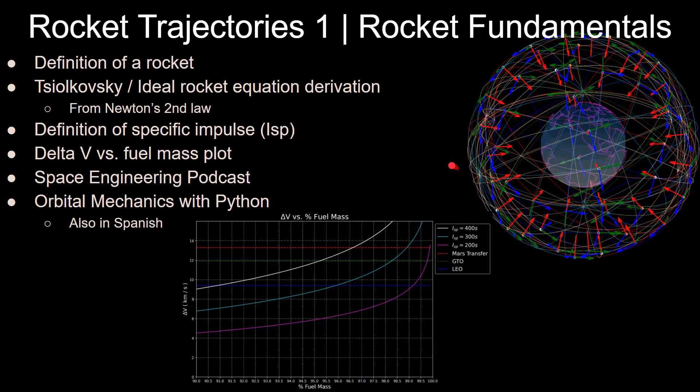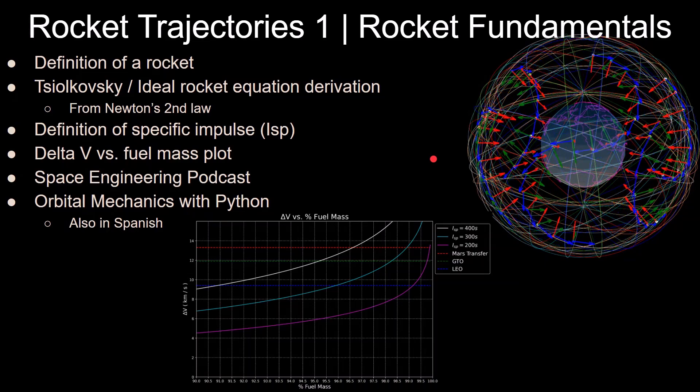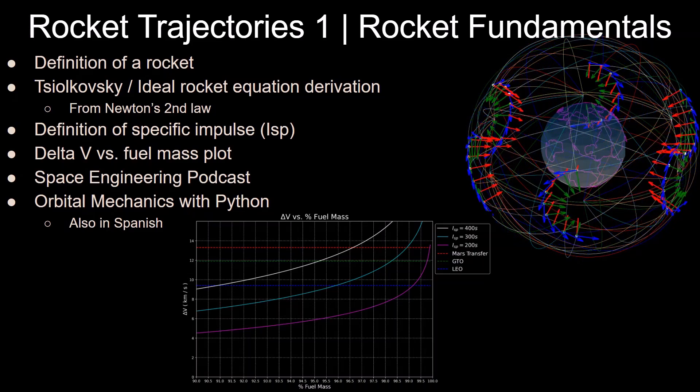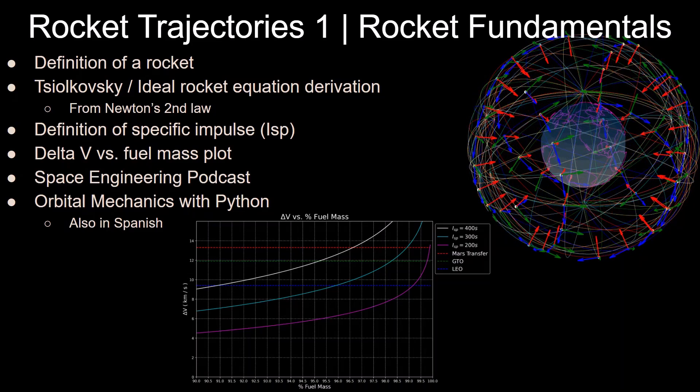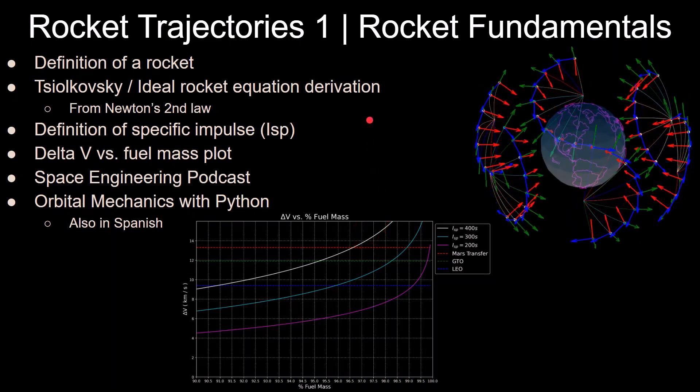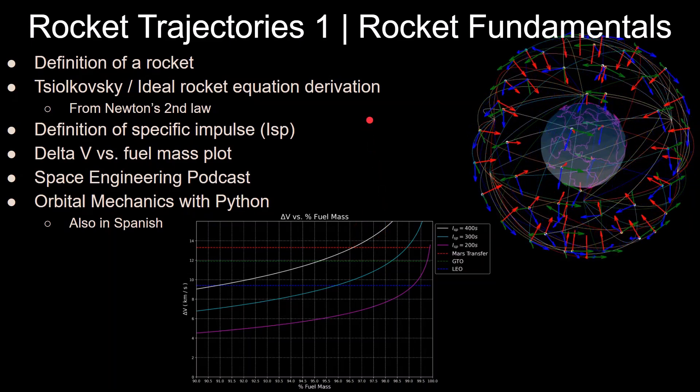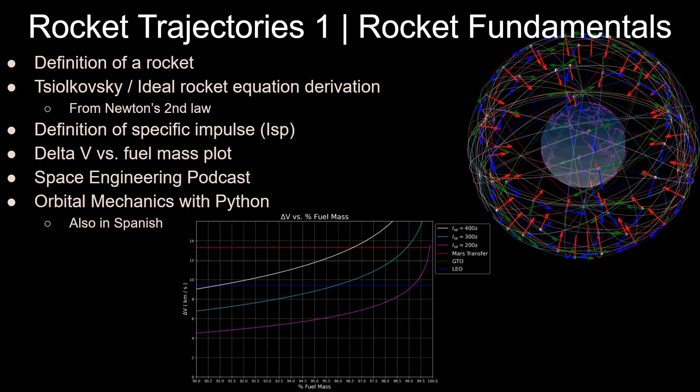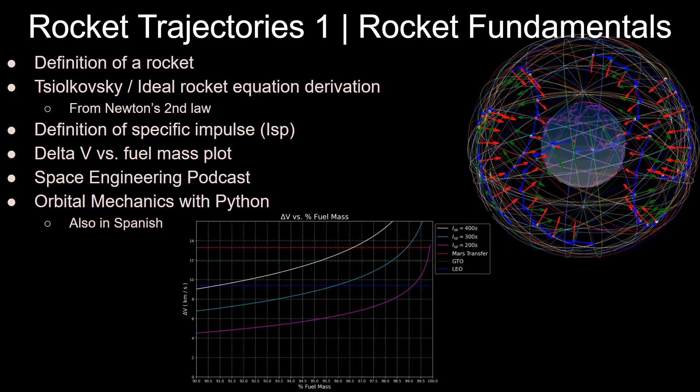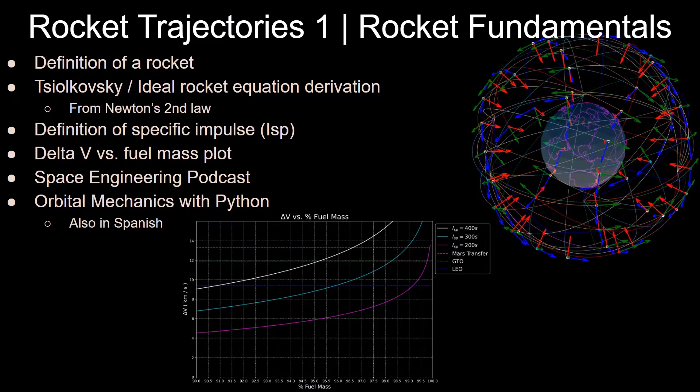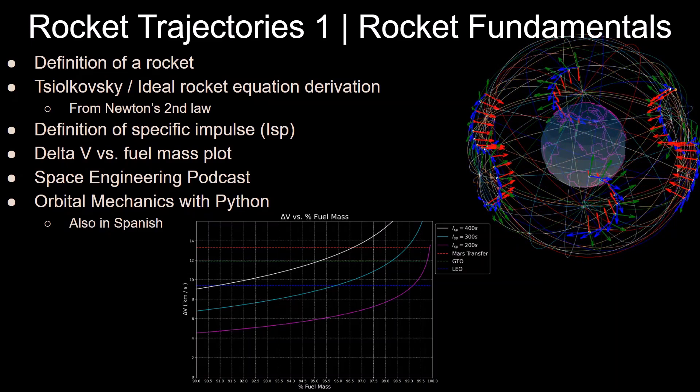In this video, we'll be going over the definition of a rocket, the Tsiolkovsky ideal rocket equation derivation and how it comes from Newton's second law, definition of specific impulse and a delta V versus fuel mass plot, which is the one here on the bottom. I have the space engineering podcast, which is also available on Spotify, Google podcast and Simplecast. I have over 50 videos on orbital mechanics with Python, and I'm also making them in Spanish.